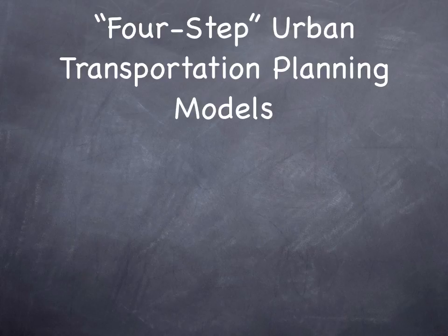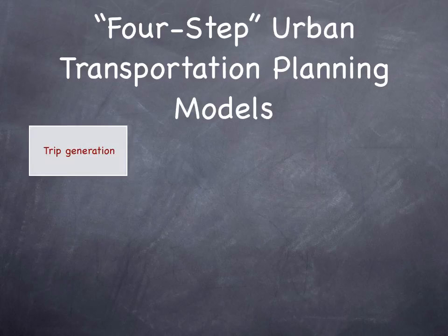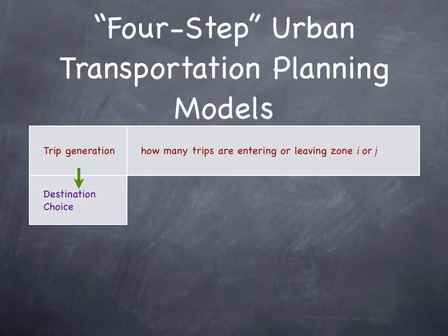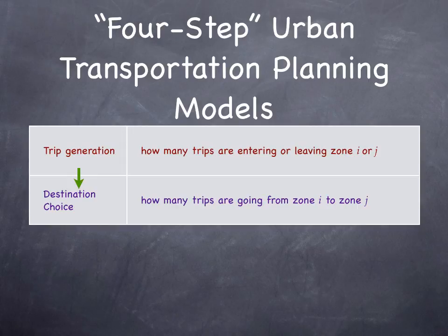It's roughly following the sequence of what's typically called the four-step urban transportation planning model. These four steps don't have to be done in exactly this order, and real models are much more complicated — this is a conceptual framework. The first question we ask is trip generation: how many trips are entering or leaving zones? We divide the world into transportation analysis zones — for instance, the Twin Cities metropolitan area is divided into 3,000 transportation analysis zones in the most recent version of the Metropolitan Council's model. The next step is destination choice: how many trips are going from zone I to zone J? We need to do this for all 3,000 zones, meaning 3,000 × 3,000 = 9 million origin-destination pairs.